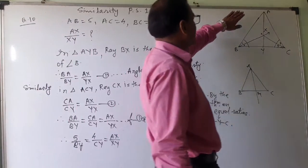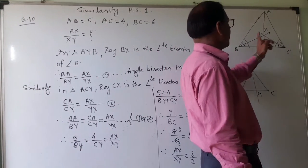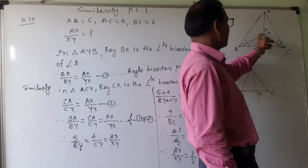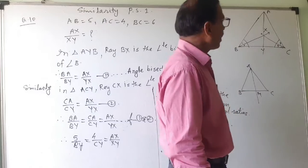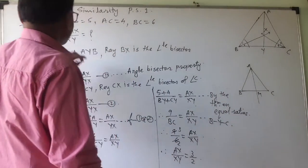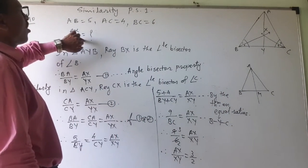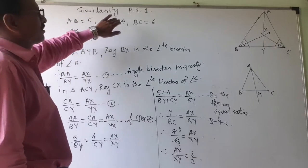That question reads: in triangle ABC, BX and CY are the angle bisectors of angle B and angle C. I have to find AX upon XY is equal to how much? AB is given, AC is given, BC is given.